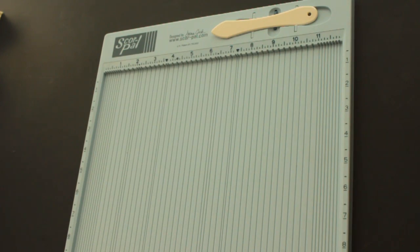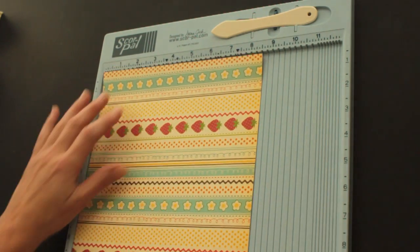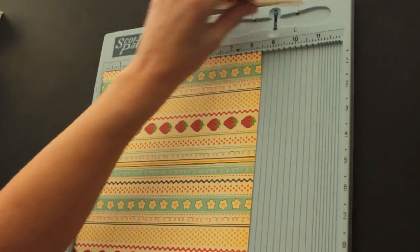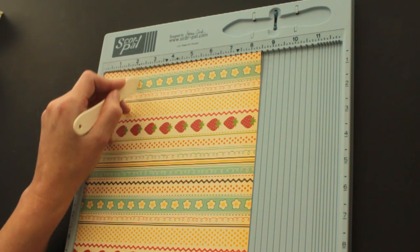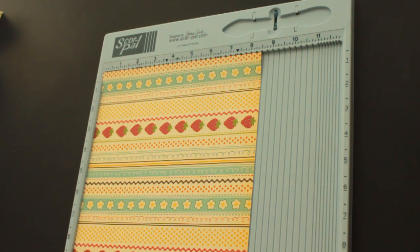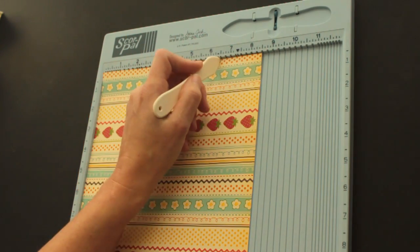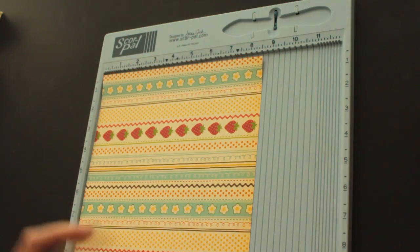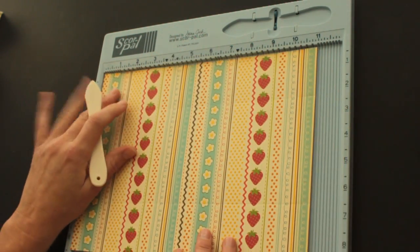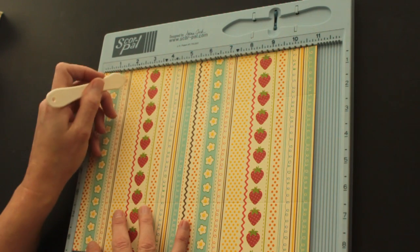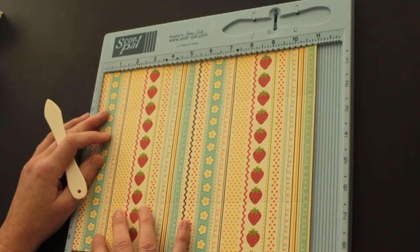So to start out with, you need a piece of 8.5 x 11 patterned paper and you score it at 2 1/8 and 6 3/8. Then you turn it to the 11 inch side and you score it at 1 1/4 and 3 3/8.